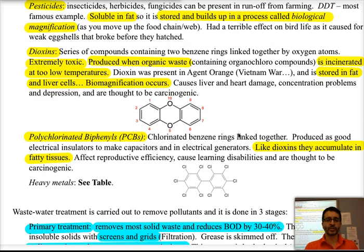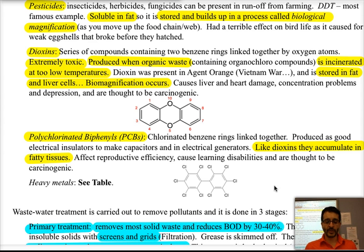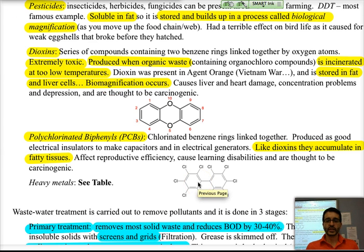Another substance present in water pollution is PCBs — polychlorinated biphenyls — which have the structure shown here at the bottom. These are also fat soluble and therefore can have biomagnification. They affect reproductive efficiency both in humans and in animals, and they can be a cause of learning disabilities.